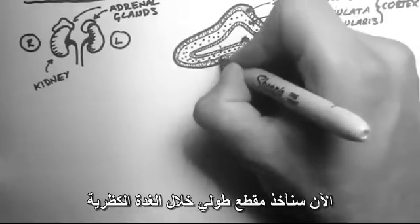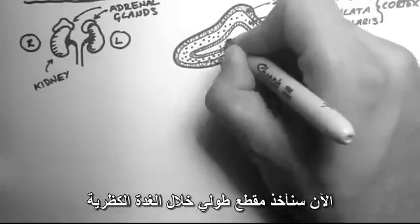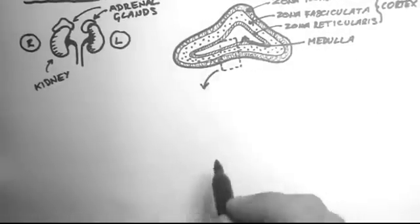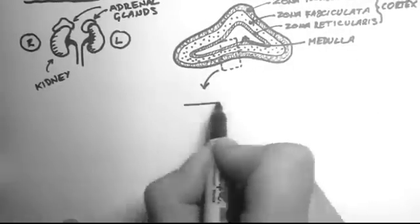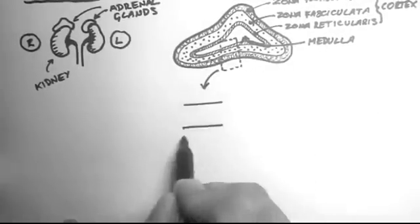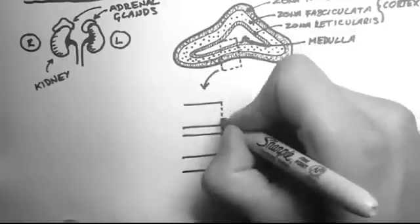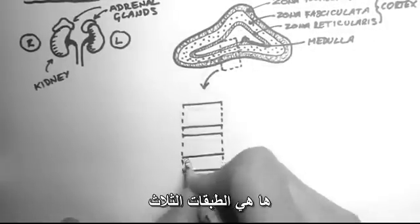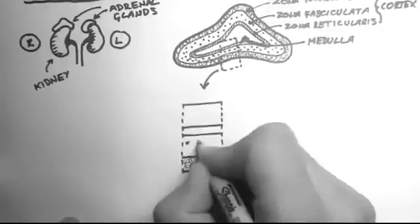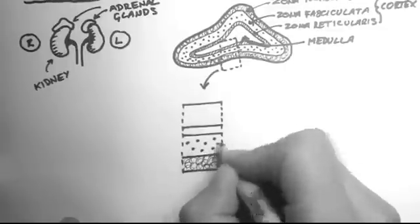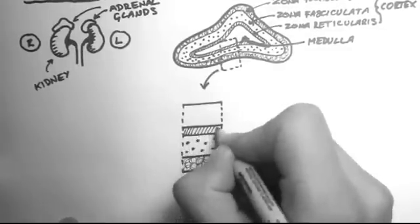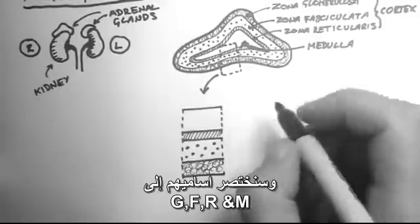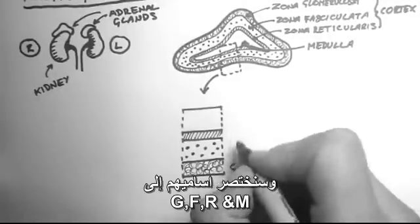Now I want to have a closer look at a section through the adrenal gland. So here are those four layers. I'll just label them G, F, R, and M.